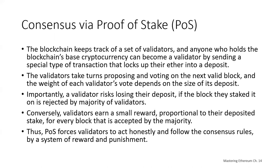In general, a proof of stake algorithm works as follows. The blockchain keeps track of a set of validators. Anyone who holds the blockchain's base cryptocurrency — in Ethereum's case, Ether — can become a validator by sending a special type of transaction that locks up their Ether into a deposit; they're staking their Ether. The validators take turns proposing and voting on the next valid block, and the weight of each validator's vote depends on the size of its deposit — the stake. Importantly, a validator risks losing their deposit, which in Ethereum theory is called being slashed, if the block they staked on is rejected by the majority of validators.